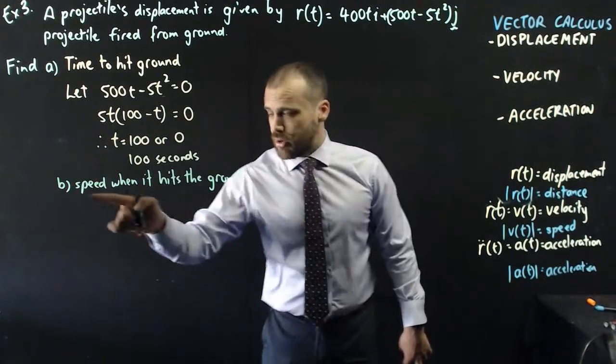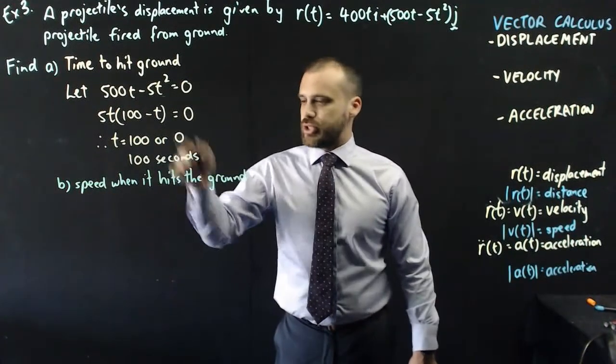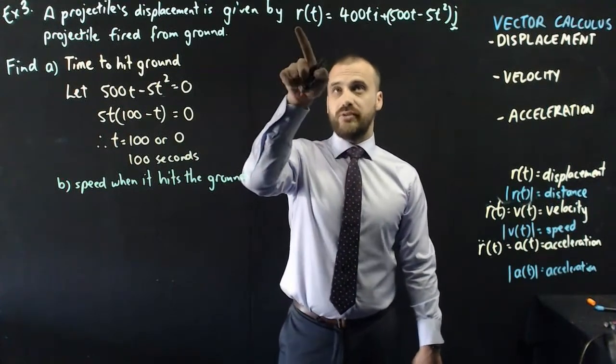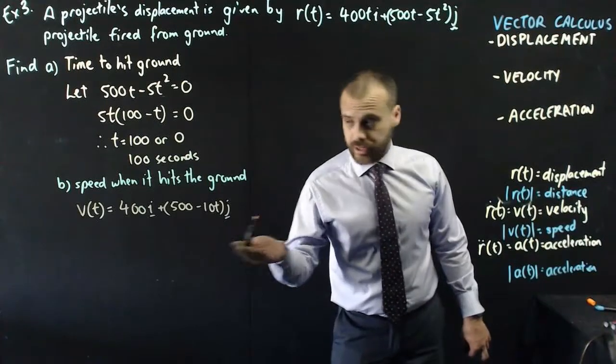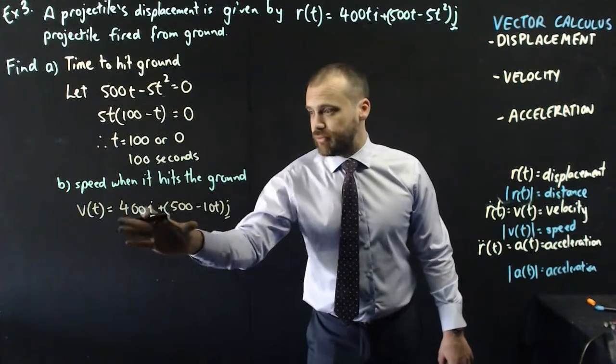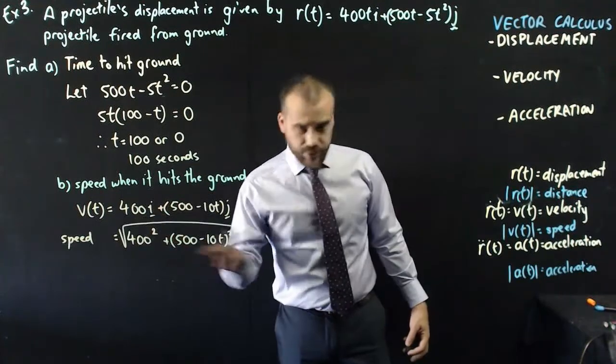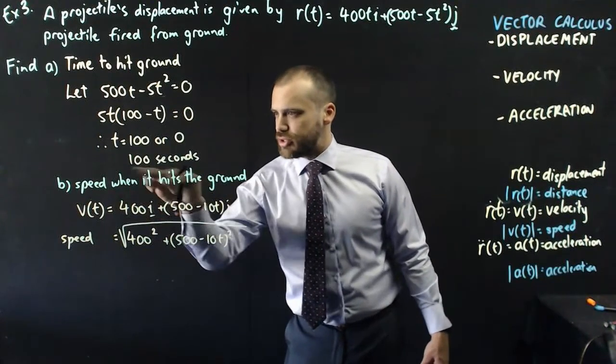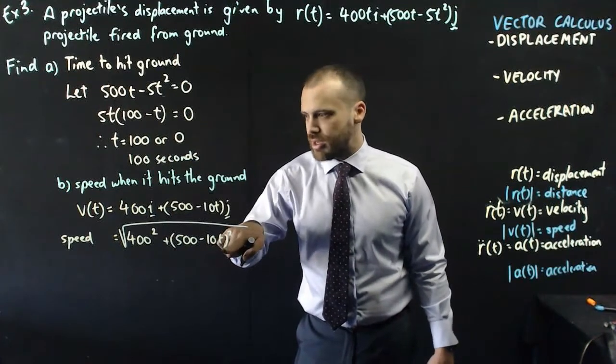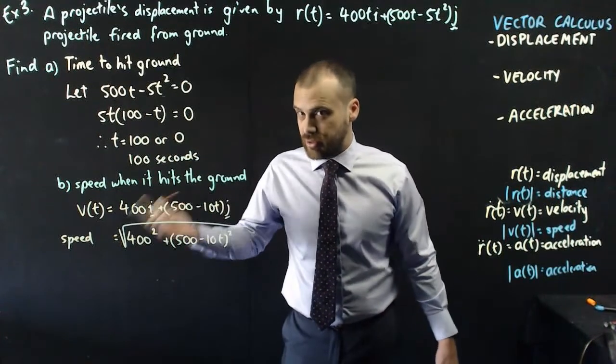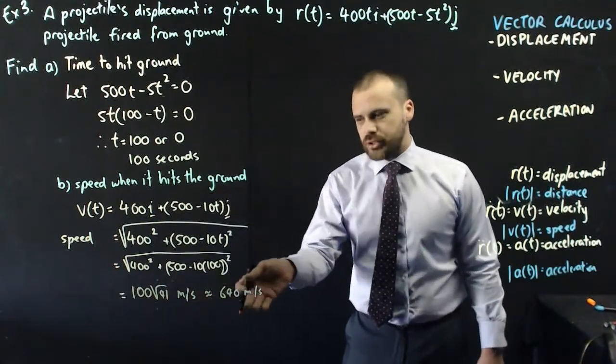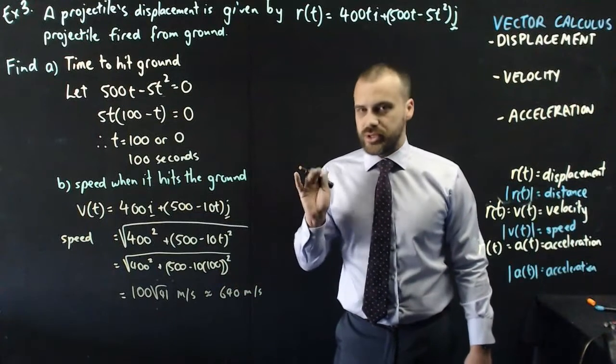So, my second question here is, what is the speed when this projectile hits the ground? Now, we know that the speed is the magnitude of the velocity. So, if I had a velocity function, which I could easily find by finding the derivative of displacement, I could then find a speed function by finding the magnitude of that. So, I have a speed function, and I know that it hits the ground at time 100 seconds. So, if I sub 100 seconds into there, I'll know the speed when it hits the ground. And we get an answer of 100 root 41 meters per second, which is approximately 640 meters per second.